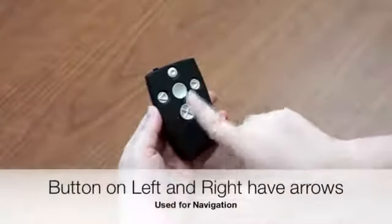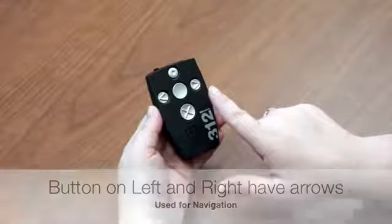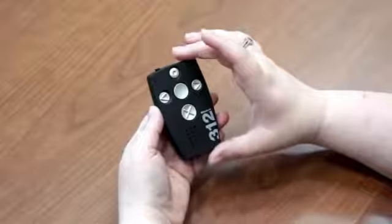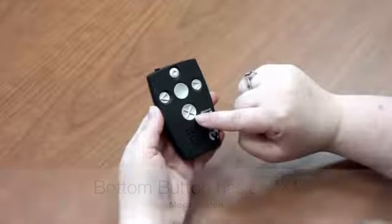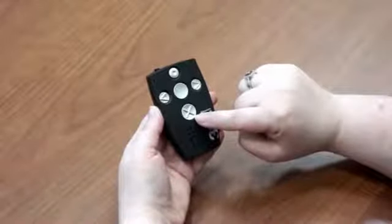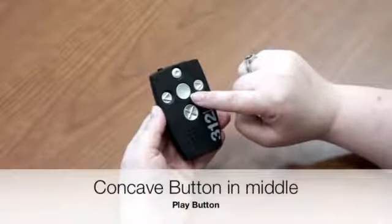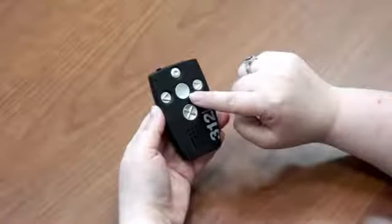The buttons to the left and right have arrows marked on them and they are used for navigation of the device menus in addition to navigating within books. The button at the bottom, with the X, is the mode button. This button is also used for navigation within the device and for using different modes of the software. The button in the middle is the play button. It is used to play any files that might be present on the device.